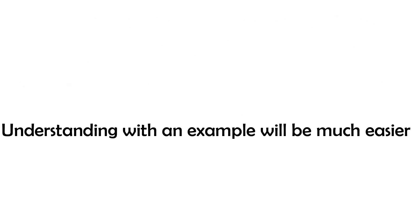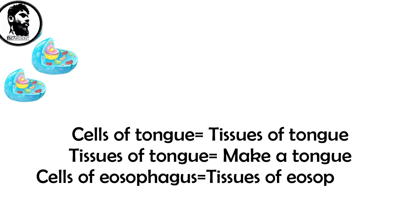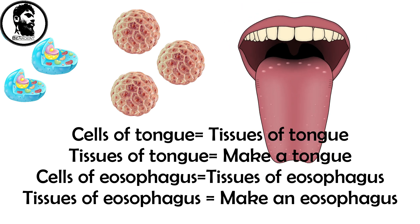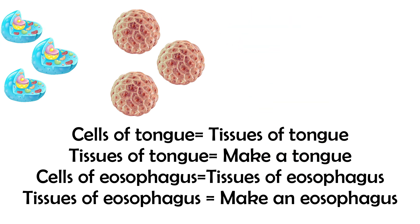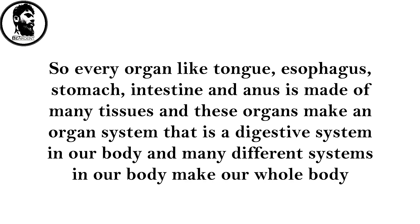If we take example to understand it, it will be much easier. We have many cells and many different tissues and many different tissues make many different organs. Like cells of tongue make tissues of tongue and tissues of tongue make whole tongue. And cells of esophagus make tissues of esophagus and tissues of esophagus make whole esophagus. Same goes for the stomach and intestine also. So every organ like tongue, esophagus, stomach, intestine and anus is made up of many tissues. And these organs make an organ system that is your digestive system in a body. And many different systems in a body make a whole body.